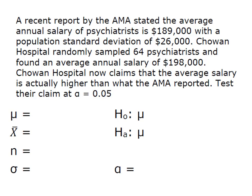Chowan Hospital randomly sampled 64 psychiatrists and found an average annual salary of $198,000. Chowan Hospital now claims that the average salary is actually higher than what the AMA reported and we're going to test their claim at an alpha of 0.05.